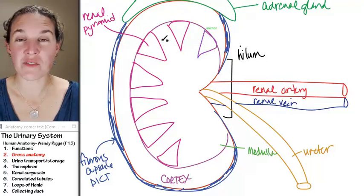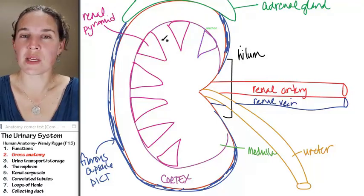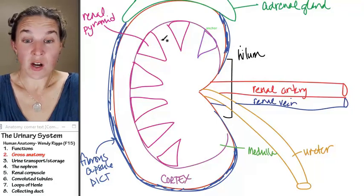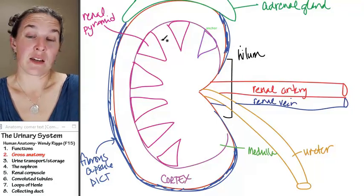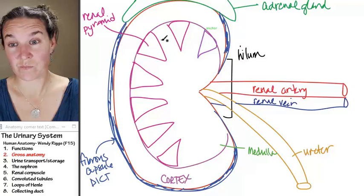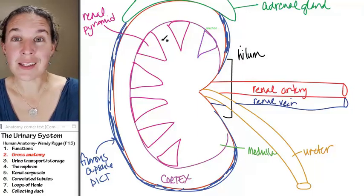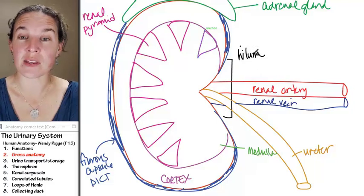Correct the false on an exam. Renal pyramids are found in the cortex of the kidney. Are they? No, they're found in the medulla of the kidney.